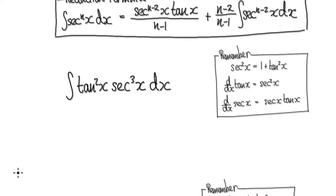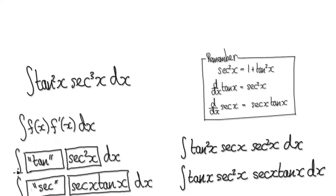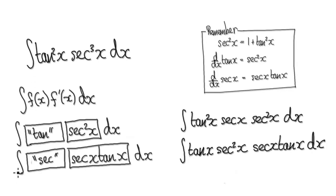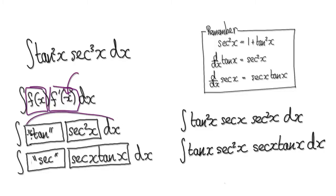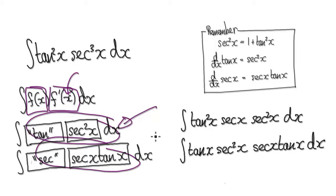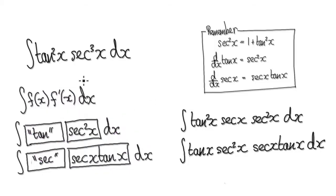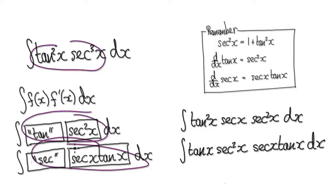So to do this, before jumping into the reduction formula, always have a quick glance to see if you can get it in the form of something being the exact derivative of another thing. Try to get it into this form or this form, because if you can, you will save yourself a lot of time. So have a quick glance and let's try to get into one of these two forms.